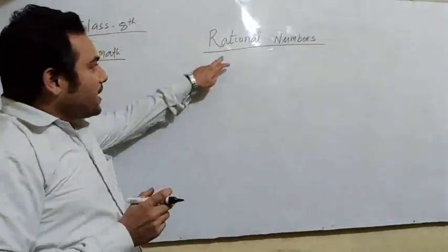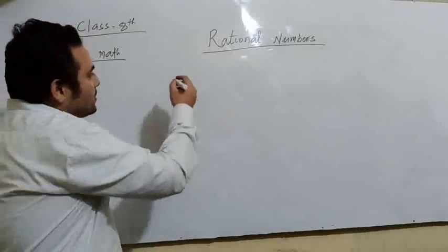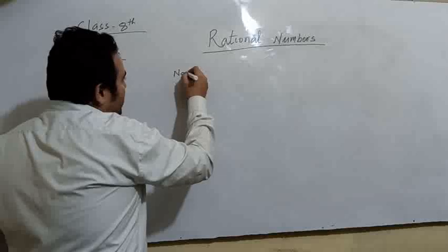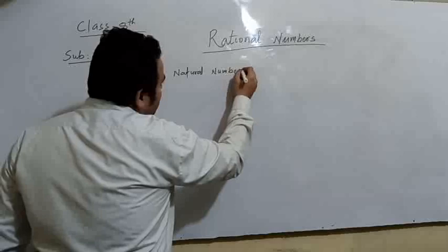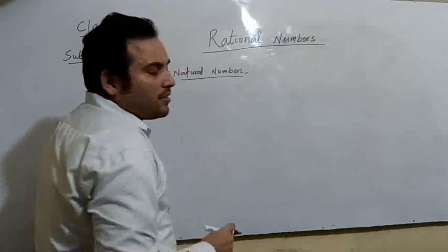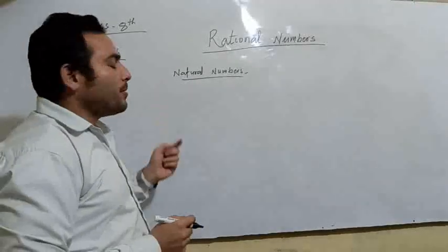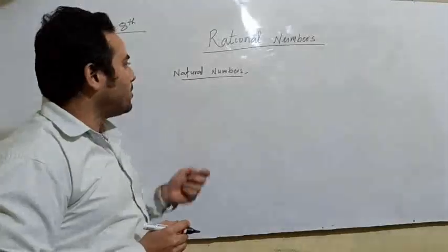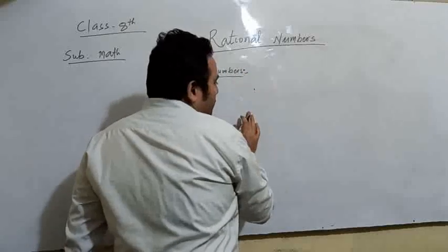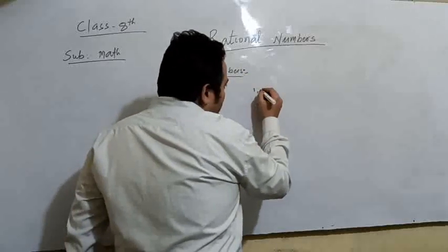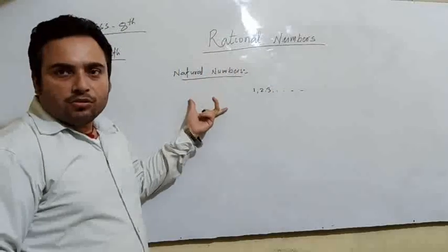Before starting this topic, we are going to study different types of numbers. First, natural numbers. We already know about natural numbers from prior classes, and in 7th class we have already studied them. You will find that all numbers that start from 1 — 1, 2, 3, and so on — these are known as natural numbers.